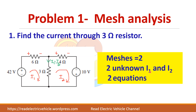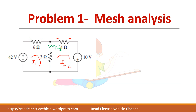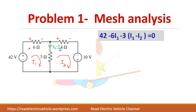Two meshes, two unknown variables — you will get two equations. We have already seen how to write the equation in the previous video. Take the first loop and write the equation. Negative to positive is always taken as positive because it is a rise in potential. Positive to negative — that is the resistor — there will be a drop in voltage, so it is taken as negative. Minus 6·I1 — the current through the 3-ohm resistor is I1 minus I2 — so it is minus 3·(I1 − I2) = 0.